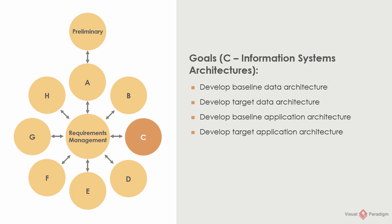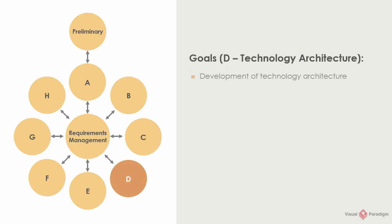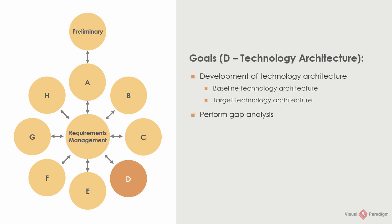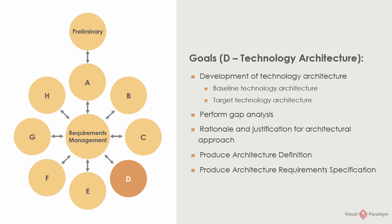You also have to develop the baseline and target application architectures to find out the approach to the coordination of application resources — will you build a new system, will there be any integration of existing systems? You have to figure out all these in Phase C. Phase D focuses on technology architecture. You have to develop the baseline and target architecture to represent how devices and physical software components are allocated to support the operations of application components. Once you've finished, you have to identify the differences between the baseline and target, known as the gap, rationalize and justify the architectural approaches, and produce the architecture definition and architecture requirements specification.